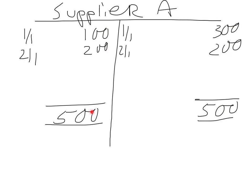So we fill in the gap, and we do that on the very last day of the month, because you always do a task like this on the last day of the month. So on the last day of the month you put in BAL CD — which means balance carried down — and 200. And it's 100 plus 200 plus 200 is equal to 500.